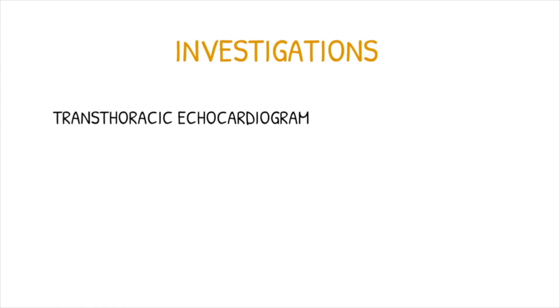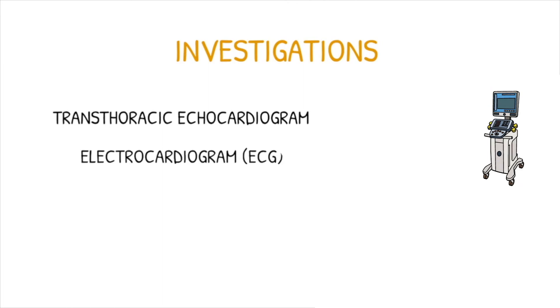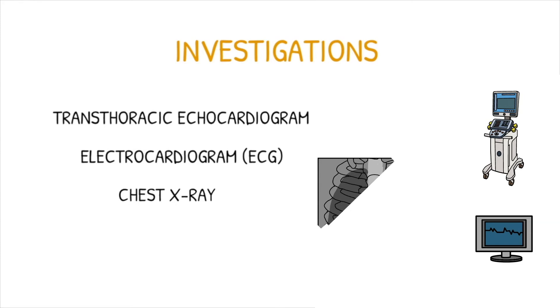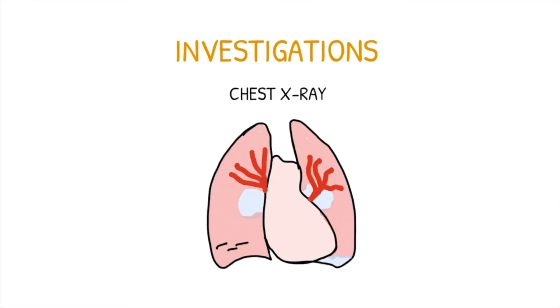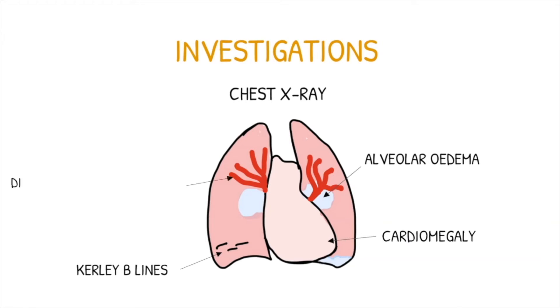The gold standard investigation for heart failure is a transthoracic echocardiogram, which allows us to accurately determine the biventricular systolic and diastolic function. An electrocardiogram or ECG may show evidence of underlying coronary artery disease and a prolonged QRS duration. A chest x-ray may reveal signs of heart failure, which can be remembered by ABCDE: alveolar edema, curly B lines, cardiomegaly, dilated upper lobe vessels, and pleural effusions.